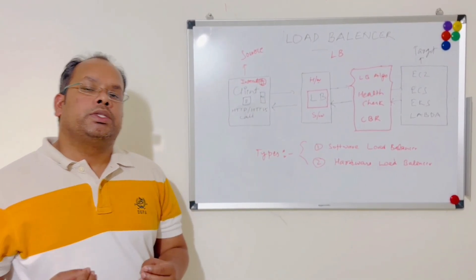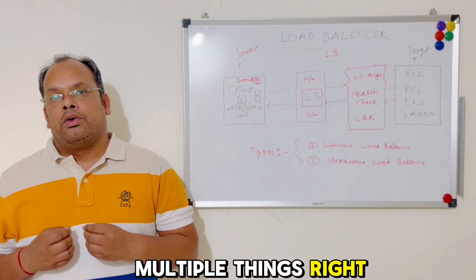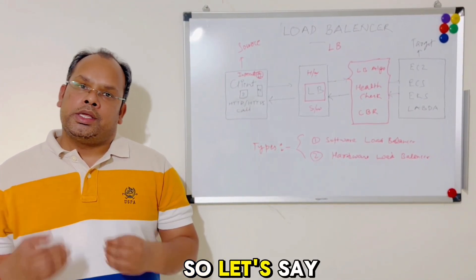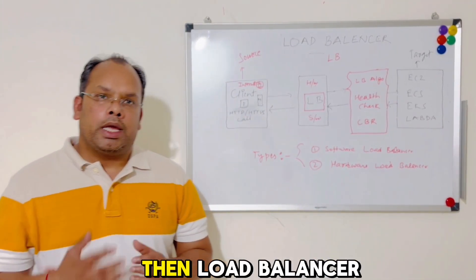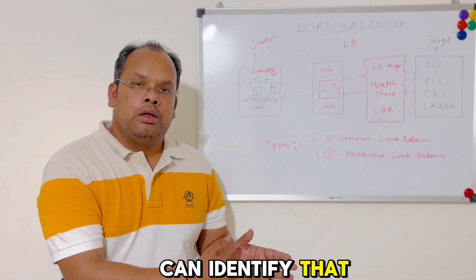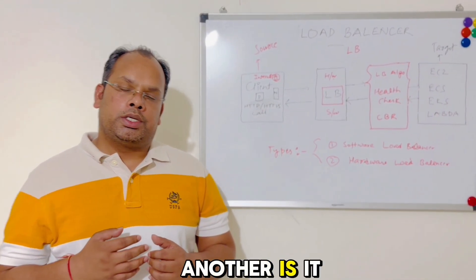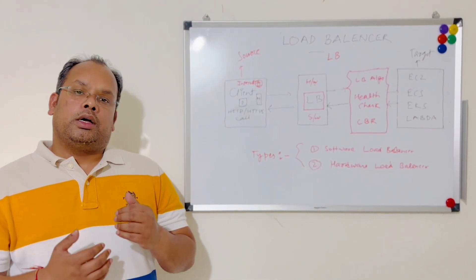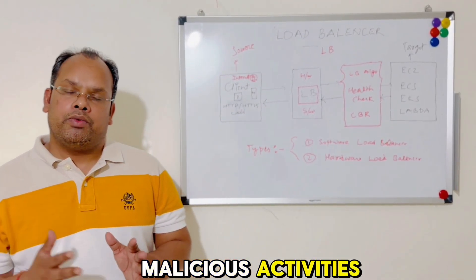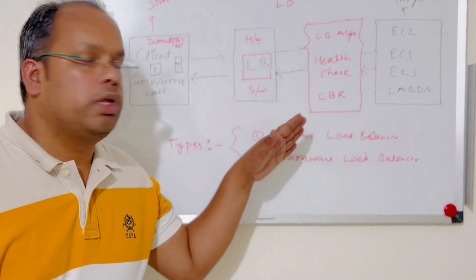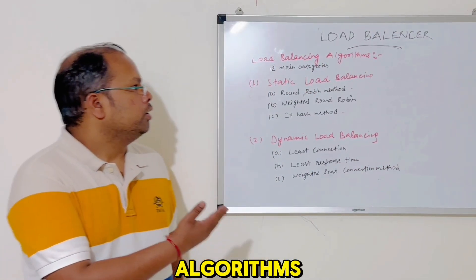A load balancer is not just about load balancing — it also provides multiple other things. For example, it provides fault tolerance. If you have 10 EC2 instances in a pool and one is malfunctioning or overloaded, the load balancer can identify that EC2 and you can remove or degrade it from the pool. It also provides security, preventing your EC2s or servers from malicious activities using web application firewall rules.